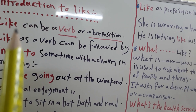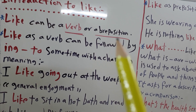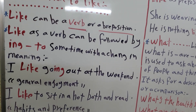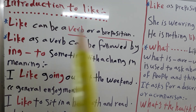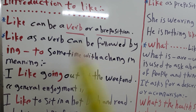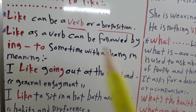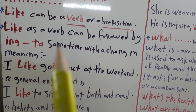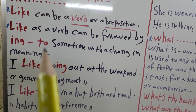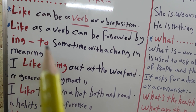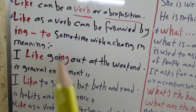The first one: 'like' can be a verb or preposition. We introduce 'like' as a verb or preposition. Also, 'like' as a verb can be followed by -ing or to, sometimes with a change in the meaning.